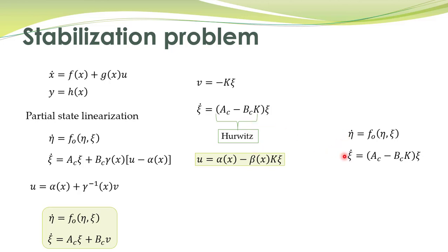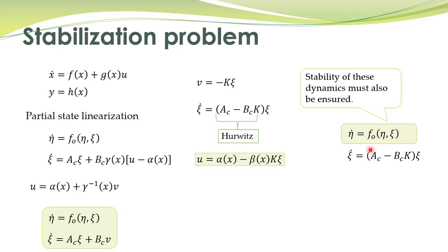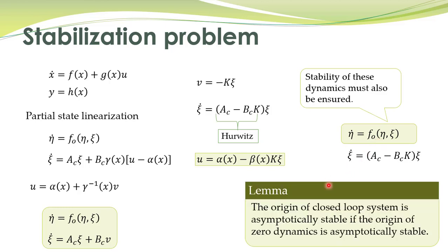With this control law we have the linearized dynamics stable, since K makes the matrix Hurwitz. However, we also need to ensure stability of the internal dynamics. For that purpose we studied a lemma which states that the origin of the closed-loop system is asymptotically stable if the origin of the zero dynamics is asymptotically stable.